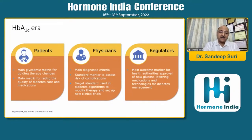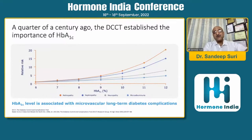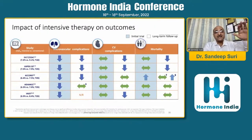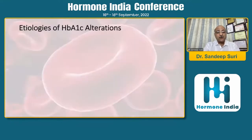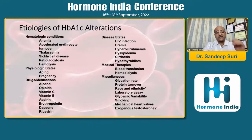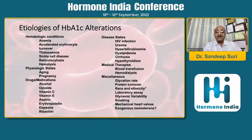HbA1c has been validated from the DCCT trial to UKPDS, ADVANCE, ACCORD, VADT, and recent CVOTs. A 1% decrease in HbA1c leads to approximately 35-31% decrease in microvascular complications, and long-term benefit in macrovascular complications. However, HbA1c depends on three things: lifespan of RBCs, glycation kinetics, and ambient glucose level. There are many fallacies in A1C - several factors can lead to falsely high or falsely low HbA1c values.